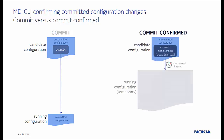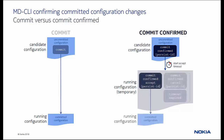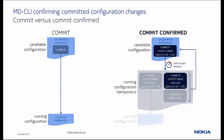The commit confirmed command executes a commit operation and requires, within a confirmation timeout, an explicit confirmation to become permanent via the commit confirmed accept command. A commit confirmed cancel command, or a confirmation timeout, cancels an ongoing confirmed commit and performs an automatic rollback to the previous state.